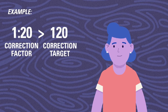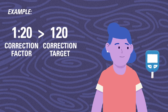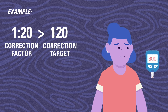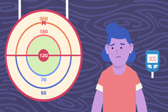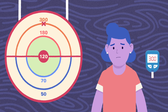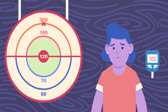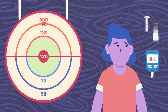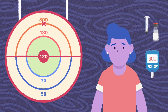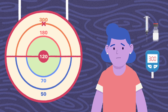The child checks their blood glucose before lunch and discovers it is 300. 300 is outside of the target range and well above the child's correction target. They will need to give insulin to cover the carbs in their lunch, but they can also deliver a correction dose to bring that blood glucose result down.